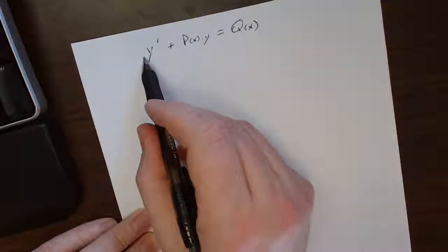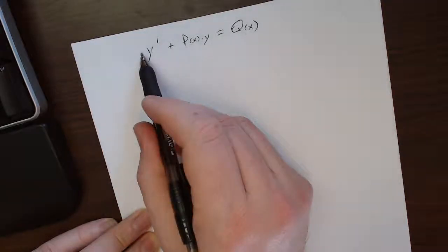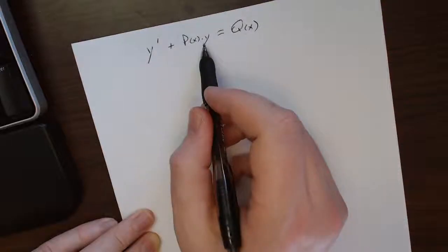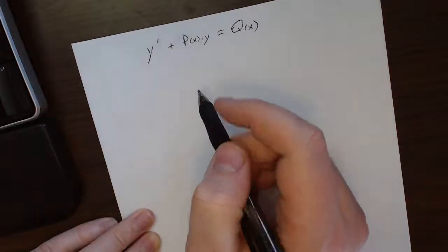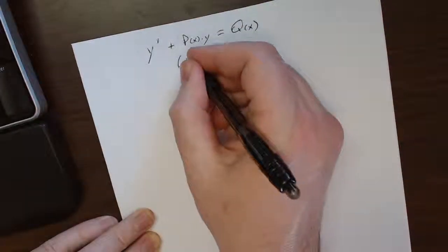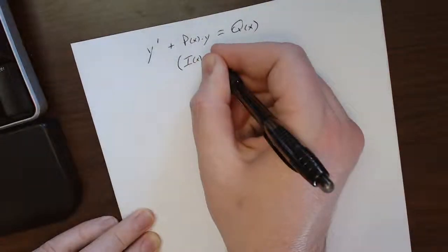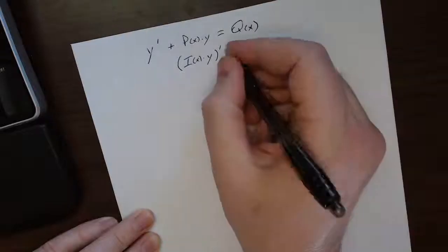Now, the idea is to recognize that if I just had the right stuff sitting here and here, that this could be a product rule. Now, think about if I had some function i times y, take the derivative, what would the product rule say?